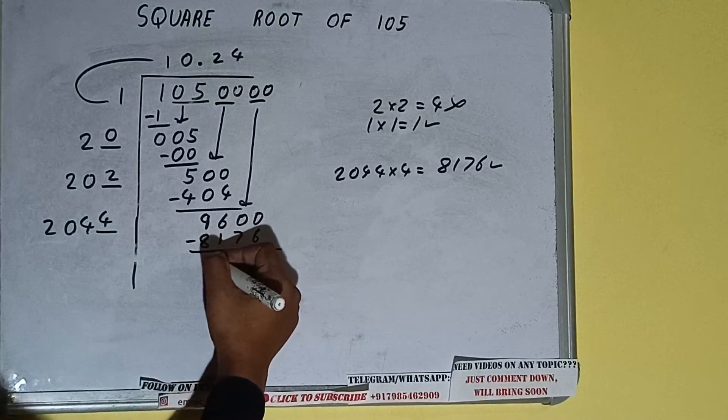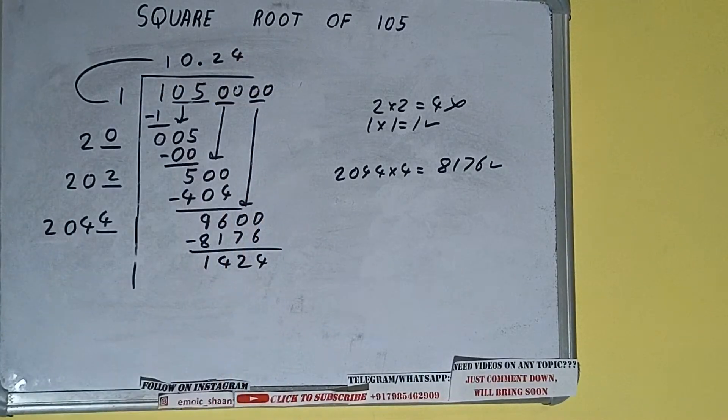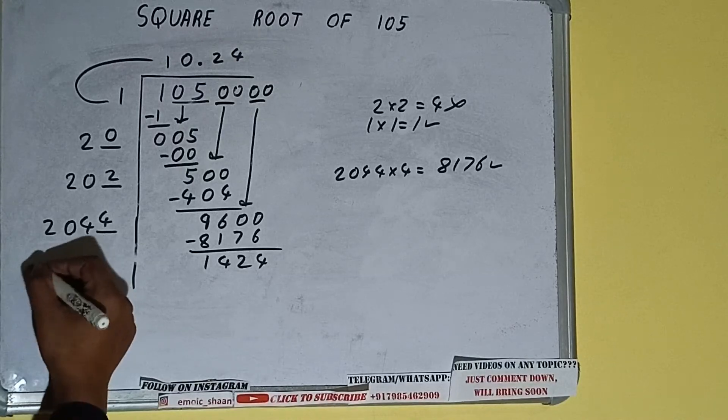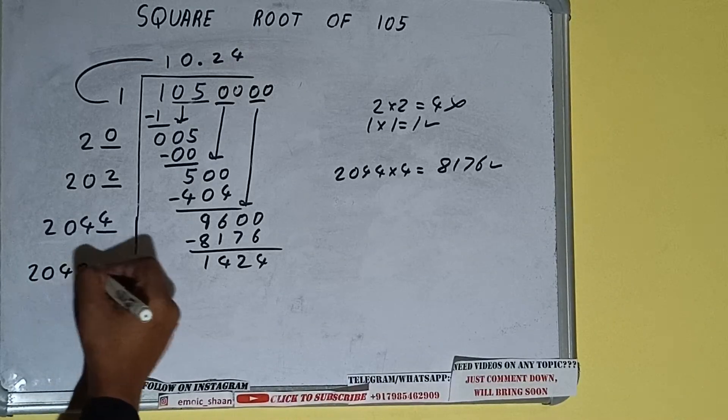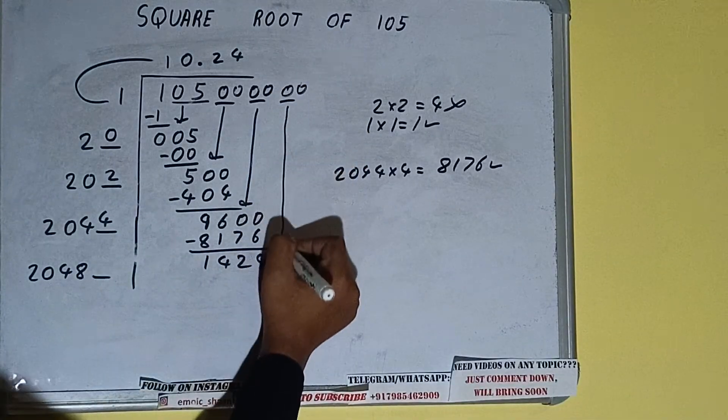And we'll be left with 1424. Now 2044 into 4 we did so add both. So 2044 plus 4 will be 2048 and one digit extra. And this number we need to make it big so bring the next pair of zeros down.